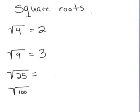The square root of 25 would be 5, because 5 times 5 is 25. And the square root of 100 would be 10, because 10 times 10 is 100.